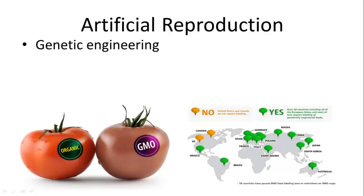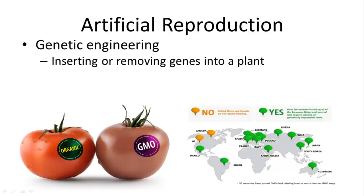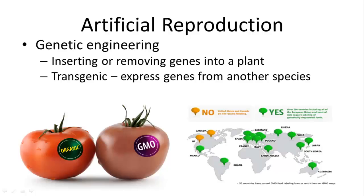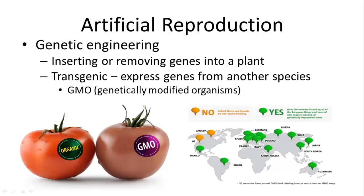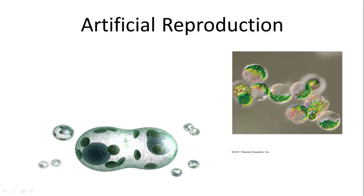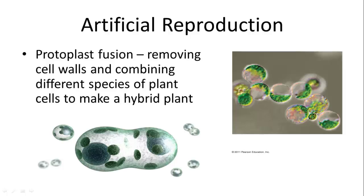You can also genetically engineer plants by inserting or removing genes. A transgenic plant expresses genes from another species — you can move disease resistance or pesticide resistance into a different plant, creating a genetically modified organism. Another artificial technique is protoplast fusion, where you remove the cell wall and fuse the cellular membranes of two cells — possibly two different species — combining their genes to make one hybrid plant.